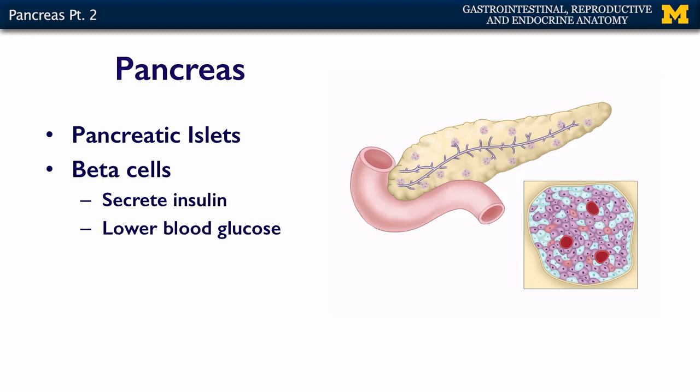Another cell type within the pancreatic islet is the beta cells. Beta cells secrete insulin, which lowers blood glucose. So when blood glucose is high, insulin is secreted by the beta cells, and it lowers blood glucose by forcing the glucose into tissues.